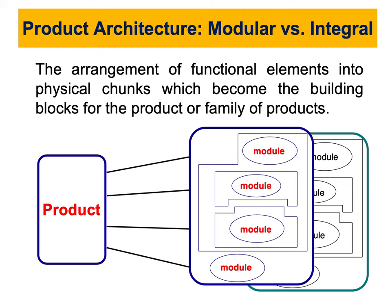The other type is called integral architecture. In integral architecture, each chunk exhibits multiple functions — not just one or a few. Functional elements of the product are implemented using more than one chunk, and a single chunk may implement many functional elements. The interactions between chunks are less defined and may be incidental to the primary functions of the product — there is a high degree of integration throughout.